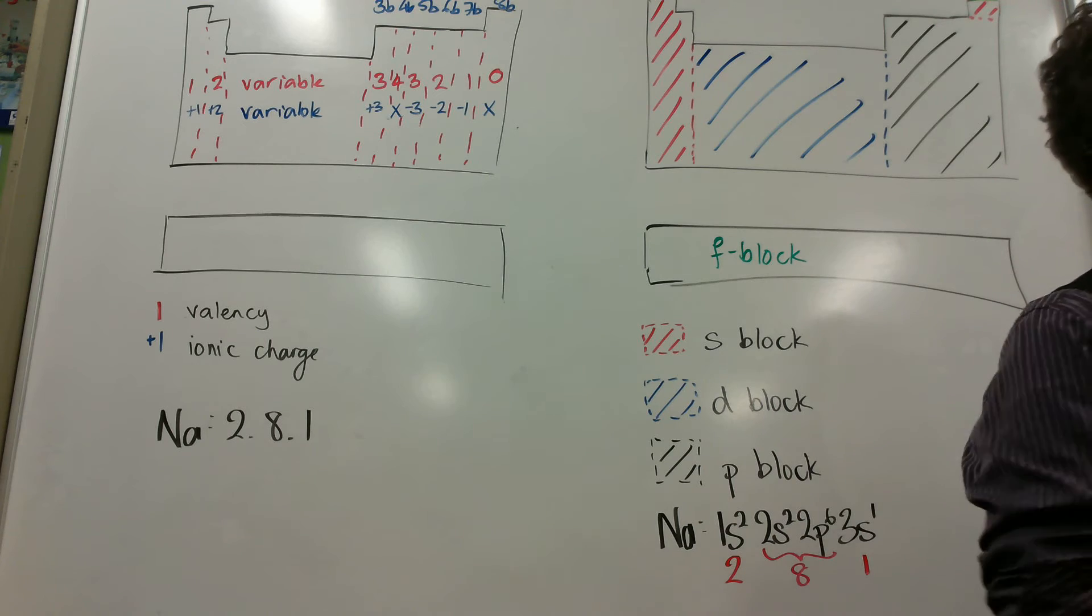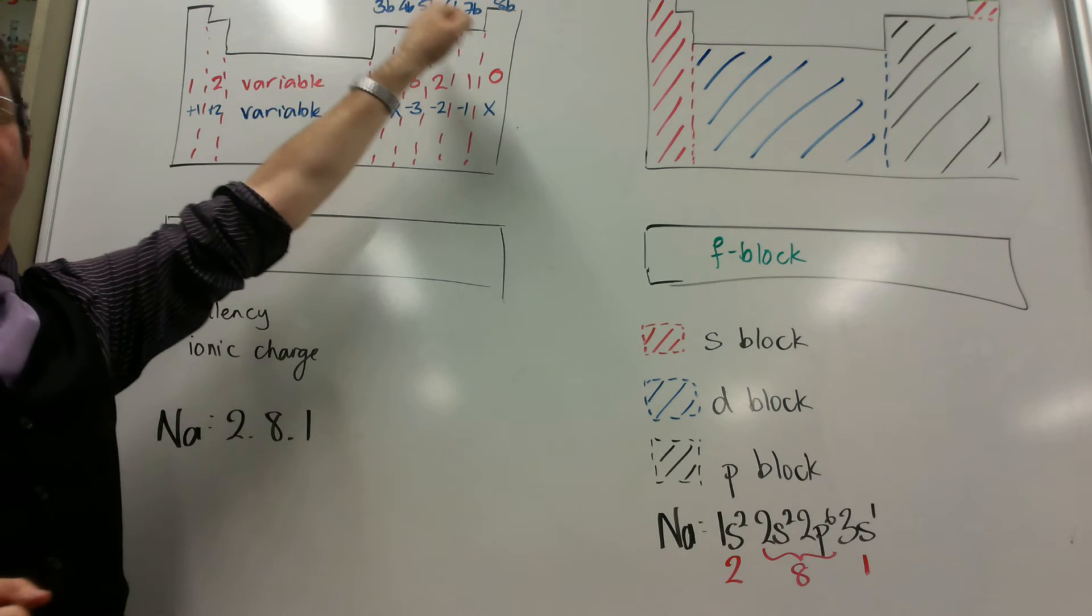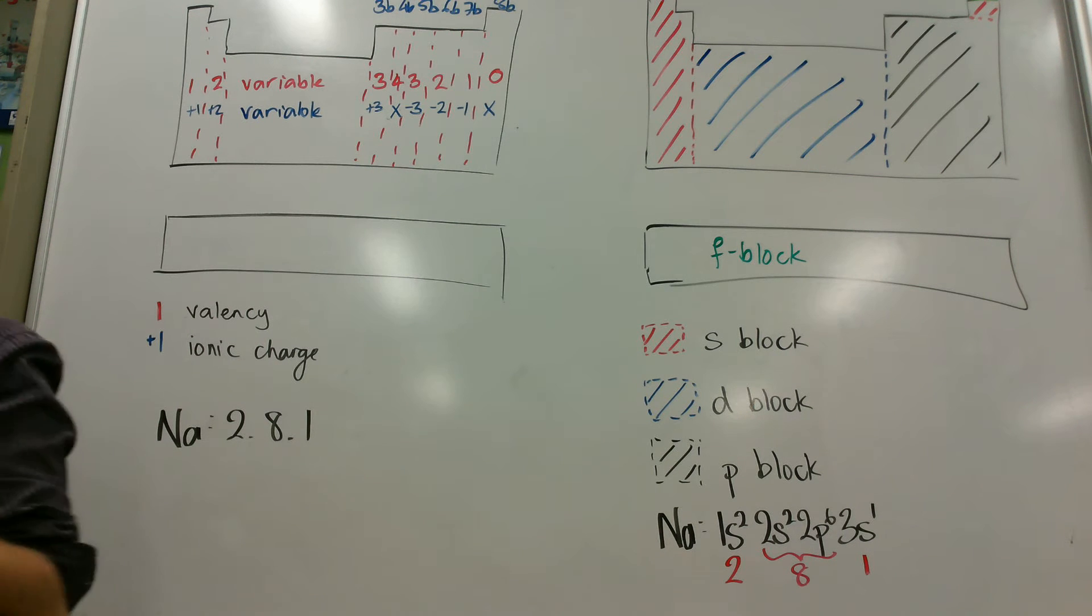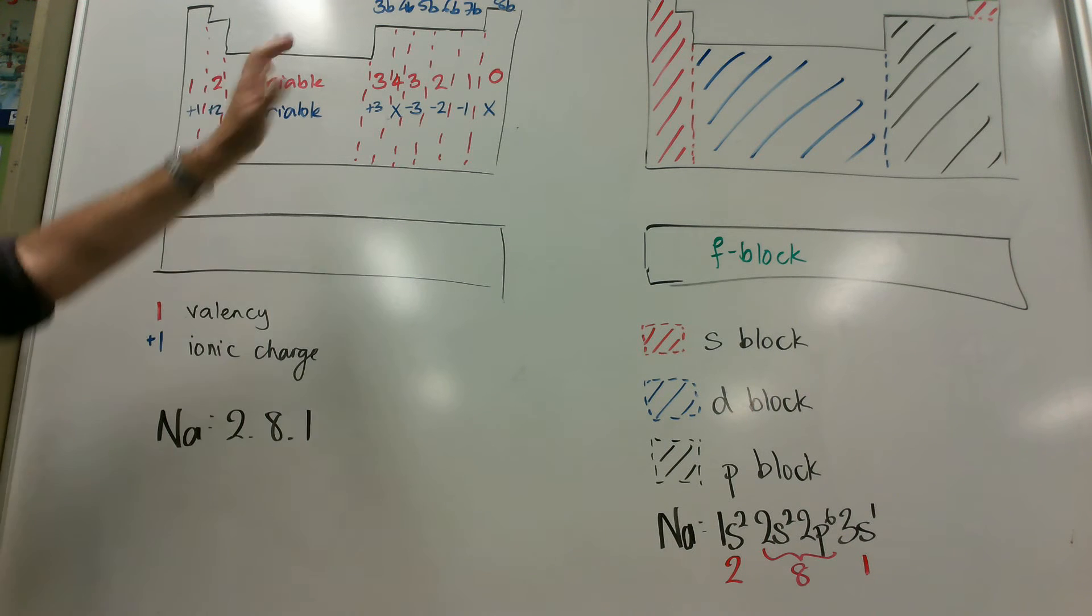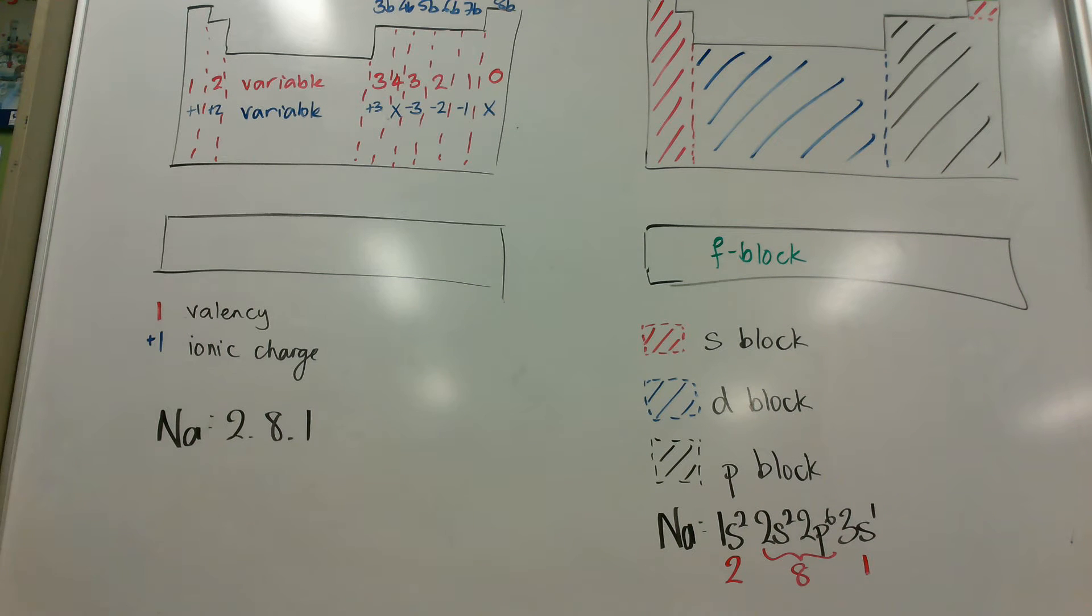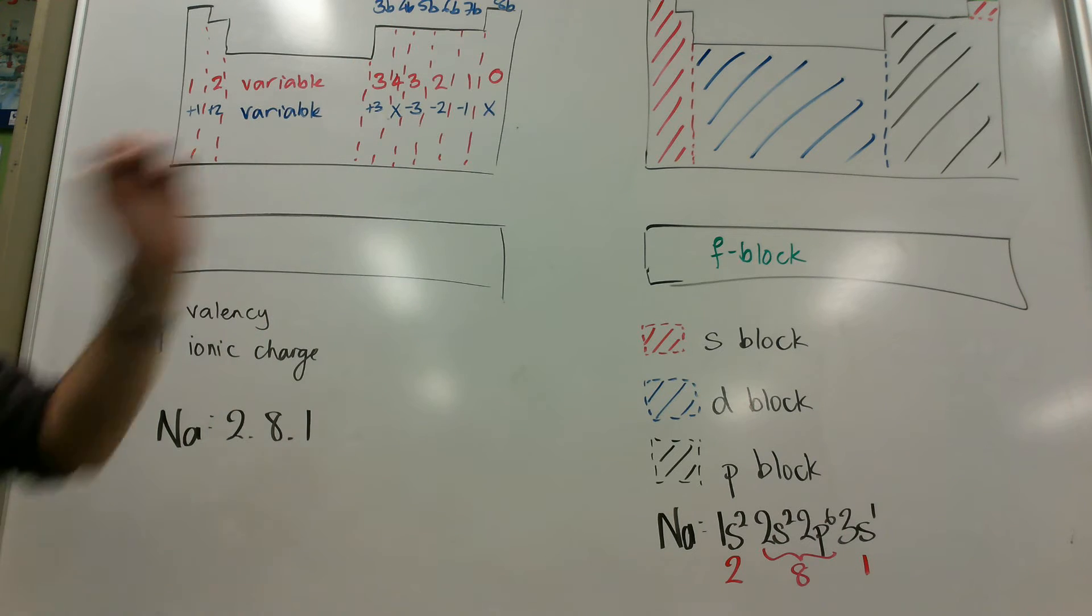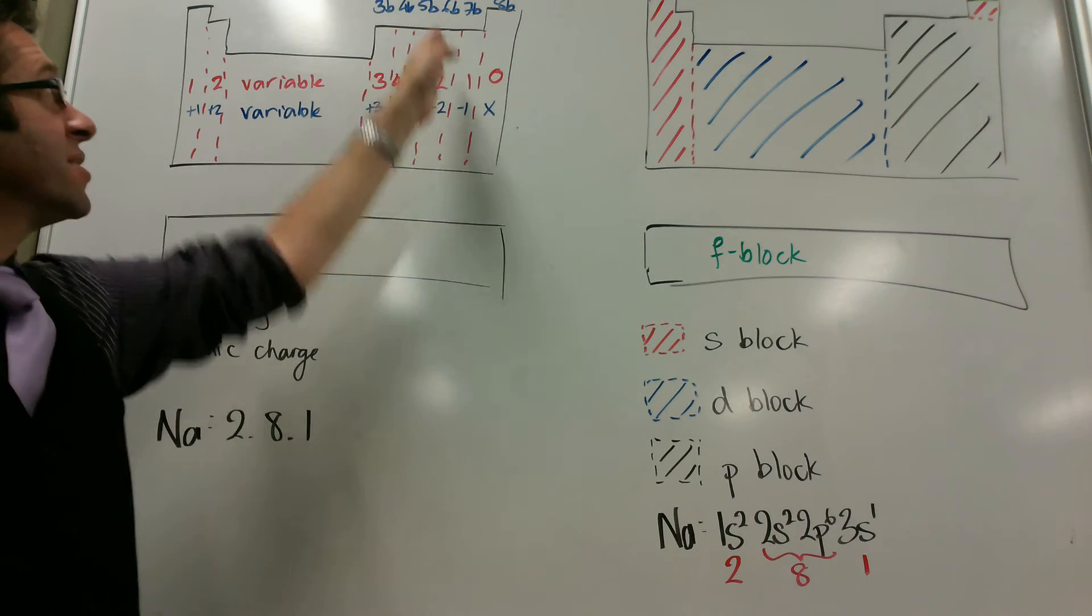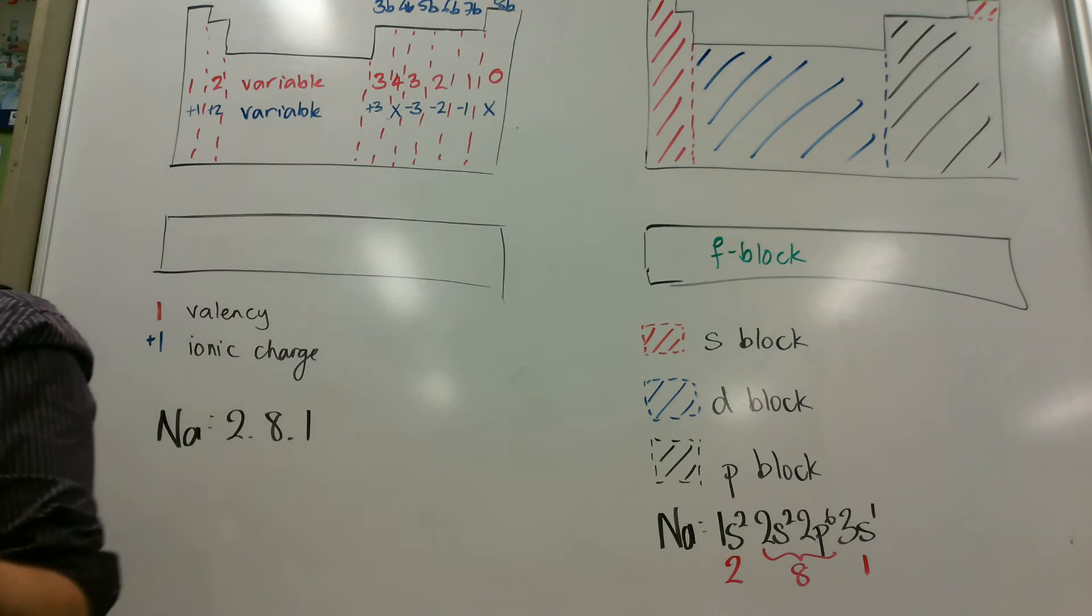The other way that you might have seen it numbered is 1, 2, then we've got 3b, 4b, 5b, and so on. And you'll see most periodic tables have got that numbering system as well. And that was basically so that in junior science, when you can ignore those ones in the middle and make life really easy for you and say these ones have one electron in their outer shell. These ones in number 2 have 2 of them and so on.